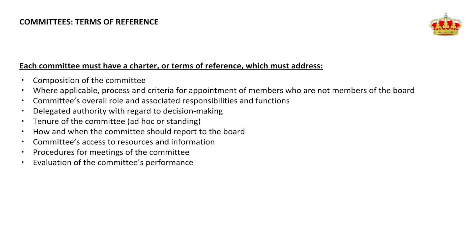As authority goes down, so reporting and disclosure requirements go up. Terms of reference must be very clear on how committees report back to the board. The committee will also need resources — financial and otherwise — and information, which can be set out in the terms of reference. How the committee goes about convening meetings must be done formally; without a proper quorum it cannot pass a valid decision. On an ongoing basis, we need to review how the committee is performing and ensure it is continuously improving.